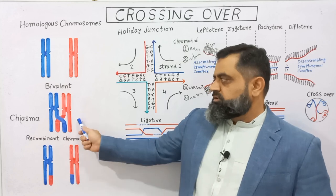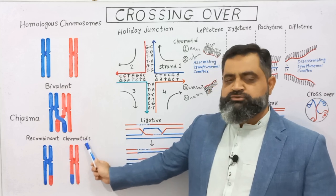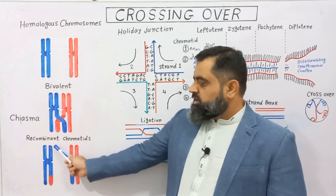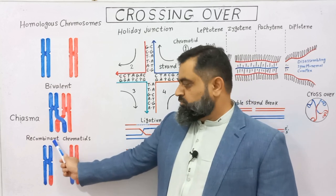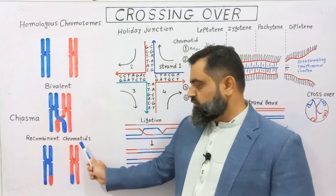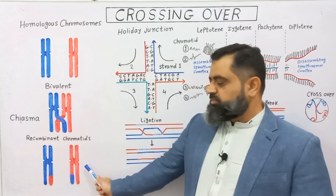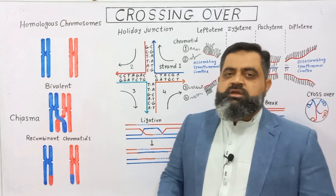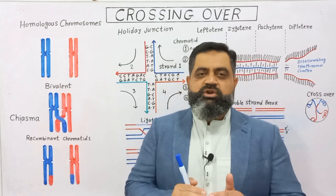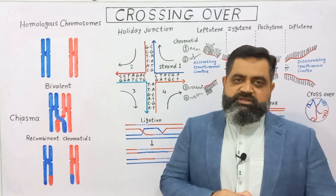After crossing over, the two chromosomes get separated from each other and become recombinant chromosomes or recombinant chromatids. As you can see in this diagram, after crossing over the blue chromosome contains part of the red chromatid, and the red chromosome contains part of the blue chromosome. These chromatids now contain genetic material from two different chromosomes, so they are known as recombinant chromatids.